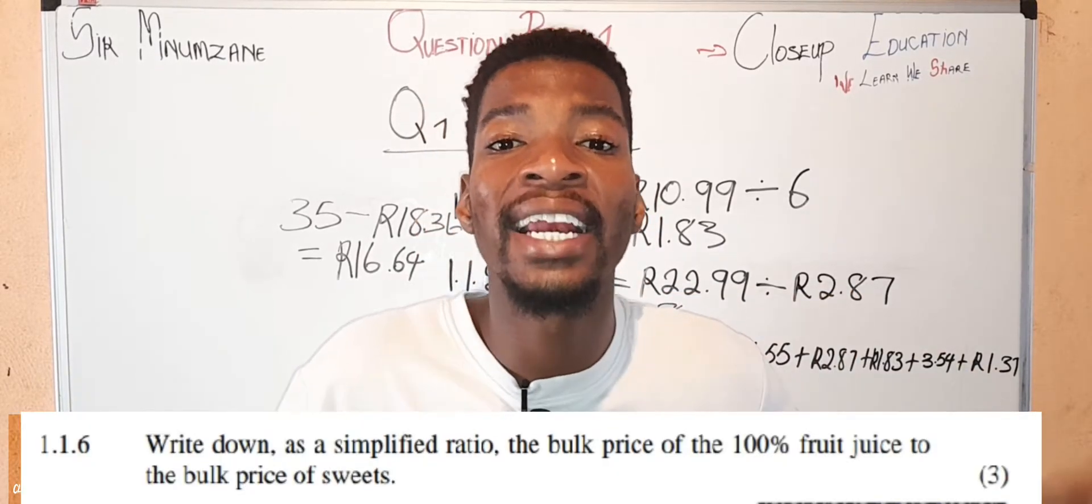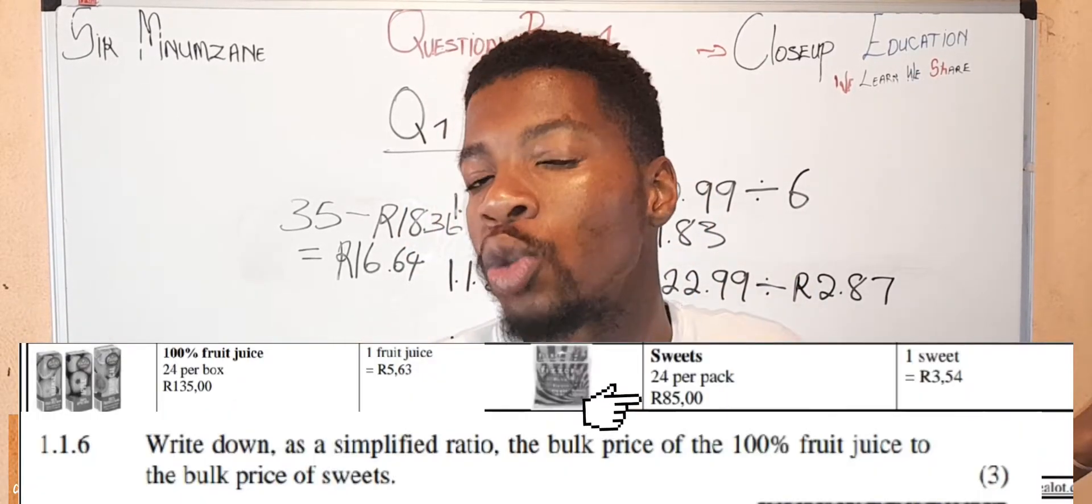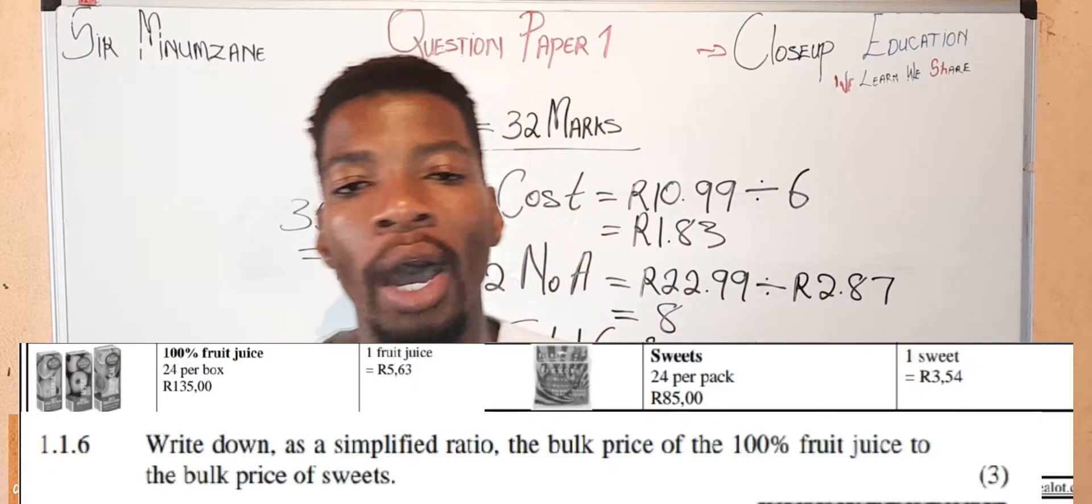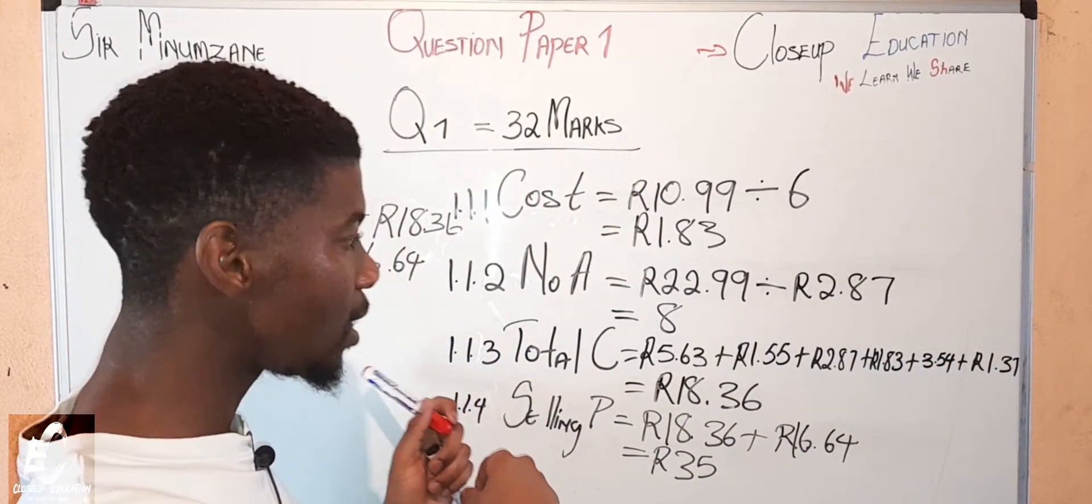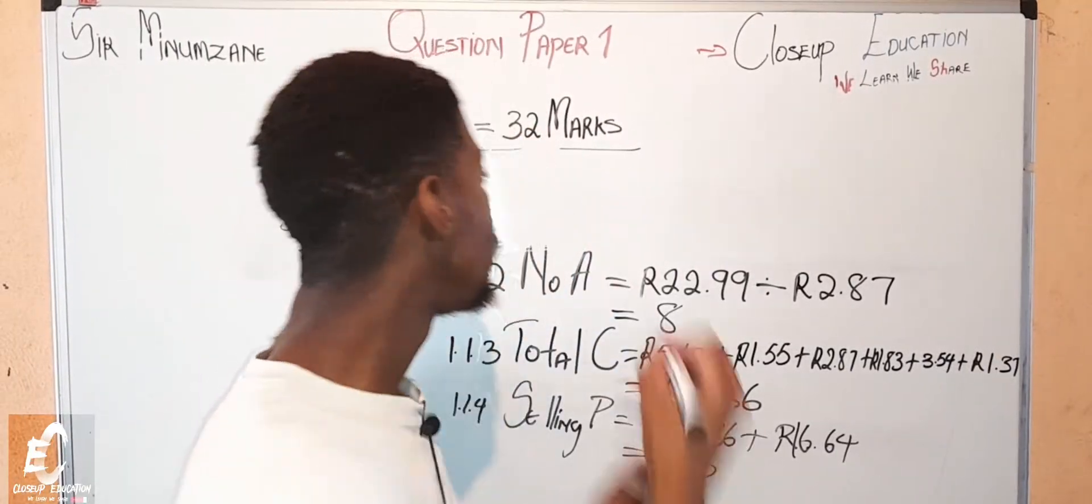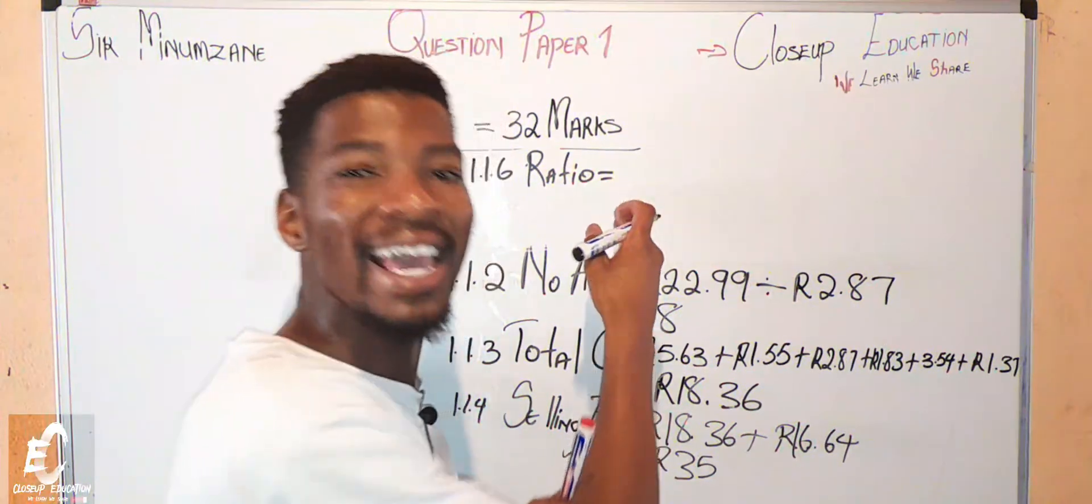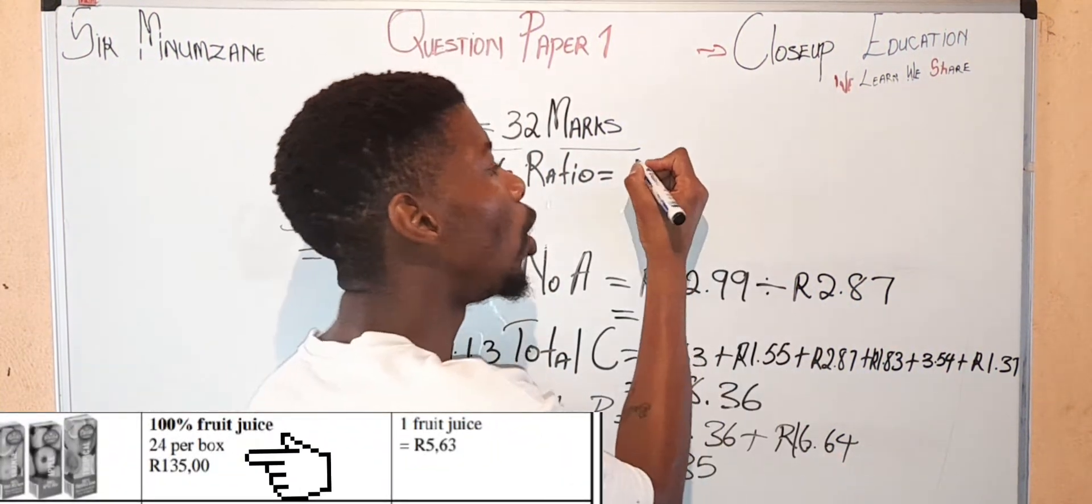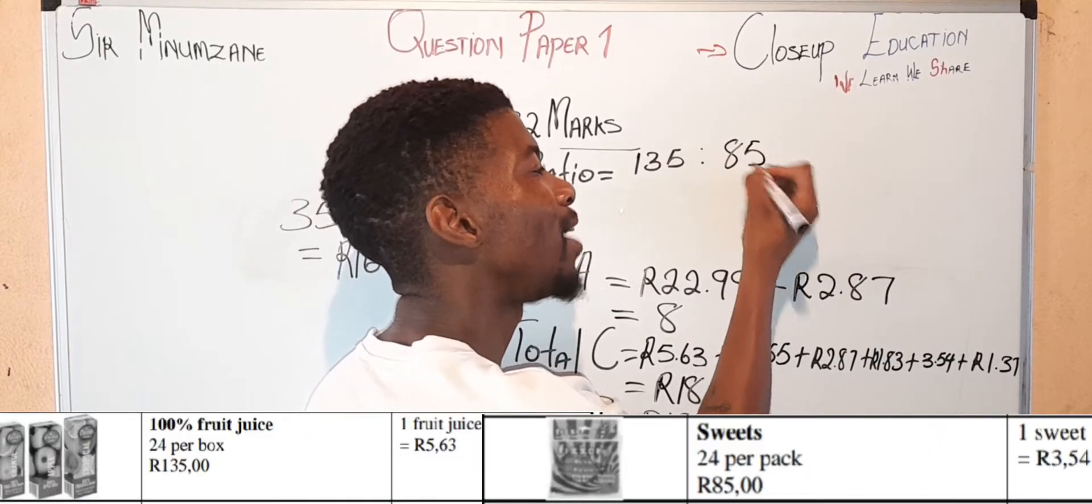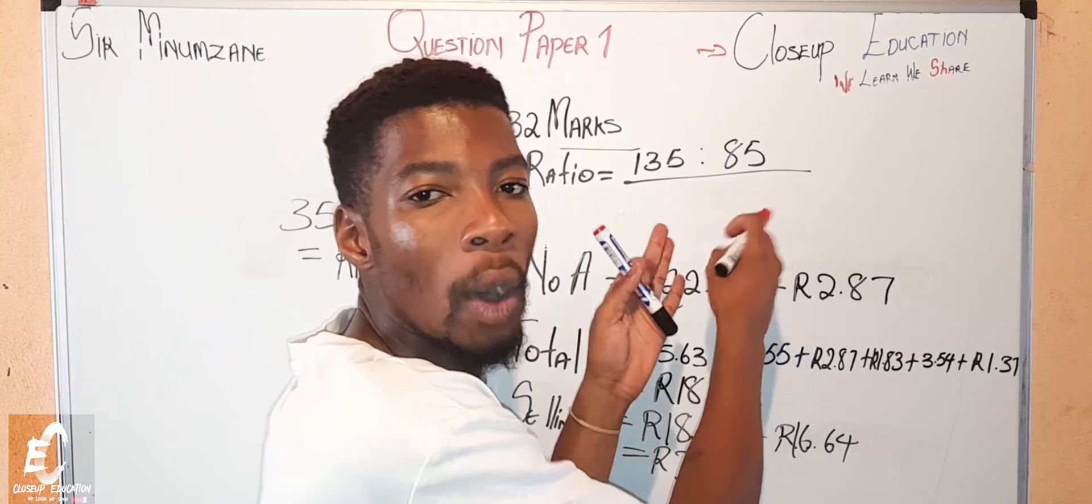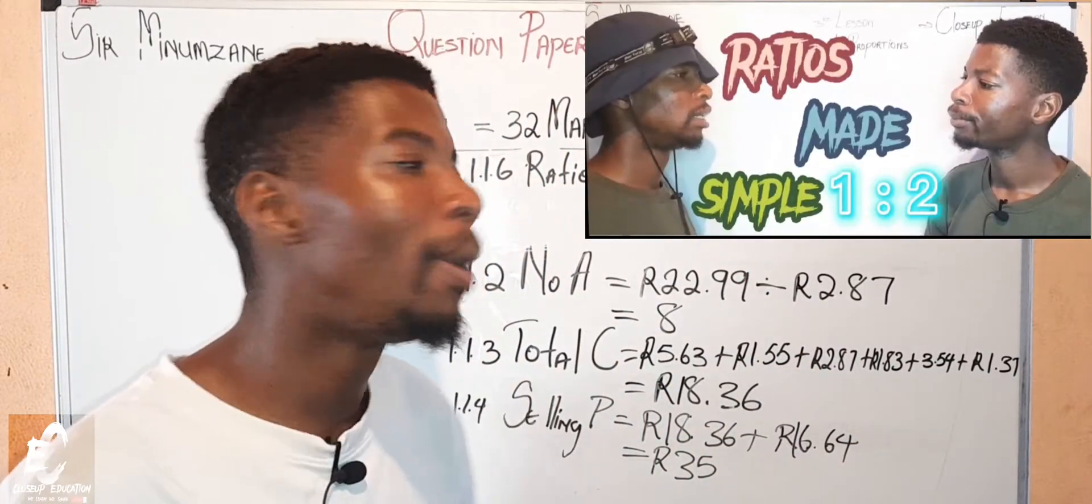Let's move to question 1.1.6. The question says write down as a simplified ratio the bulk price of 100% fruit juice to a bulk price of sweets. To answer this question you have to watch the video I dropped before this one which is about ratios. Let's move to this question. We say 1.1.6 and we write ratio. What did they say? They say the bulk of 100% fruit juice price which is 135 to a bulk of sweet price which is 285 rands. What is the number that has to go under here? We have to use our calculator and also watch the video I dropped before this one, and the amount it is going to be 5 and 5.